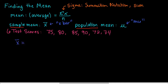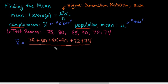What we are going to do is take our values and add them up. That's what the sum of x means. So 75 plus 80 plus 85 plus 90 plus 72 plus 74, and we're going to divide that by the number of terms. In this case, since we have six terms, we would divide by six.